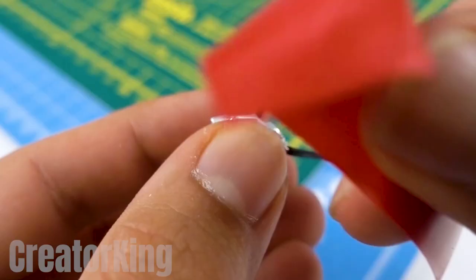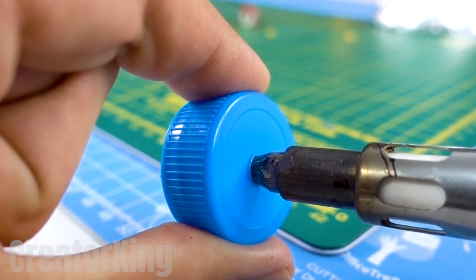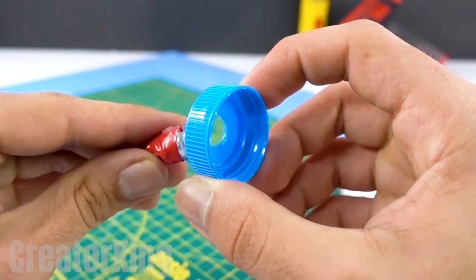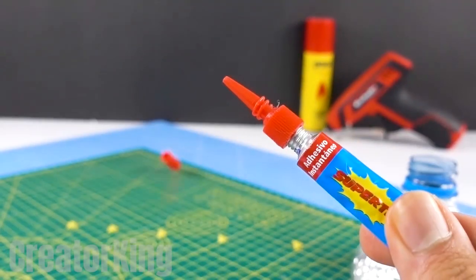Now we have a fully functional small spotlight that will light up as soon as it touches any power source. With the soldering iron, create a hole in the center of the cap large enough to allow the bulb to pass through, which we'll insert through the top. Apply some super glue so that they will never separate again.